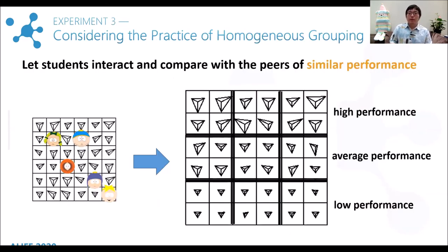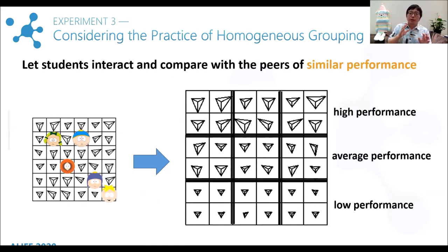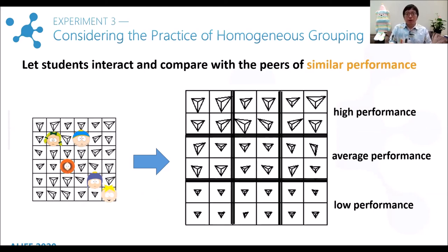Lastly, we propose a teaching structure to optimize rewarding utility and avoid students being left behind. It is the so-called homogeneous within-class grouping. That means we organize students into small groups where each group contains students of similar performance. In this situation, the interaction, collaboration, and social comparison with students will focus on their group members. This teaching structure has already been one of the most popular practices for several benefits.